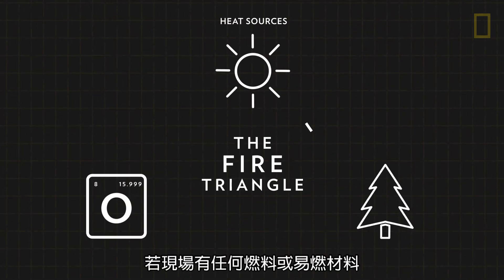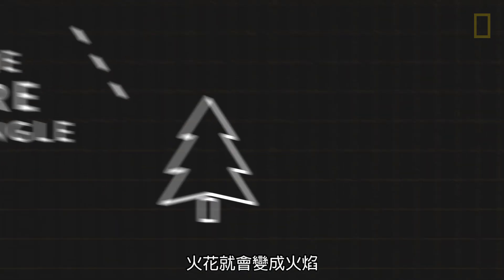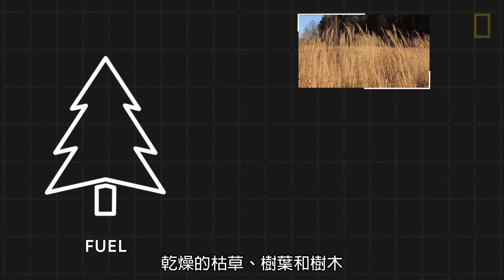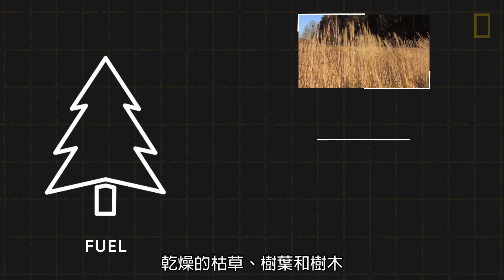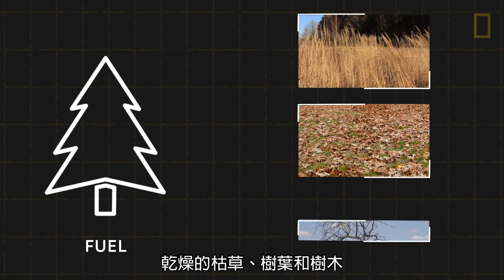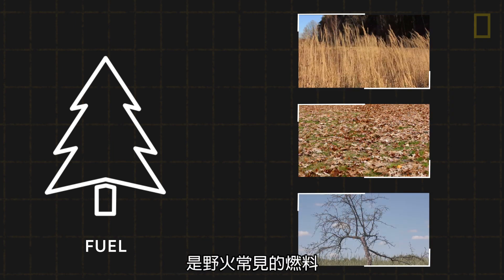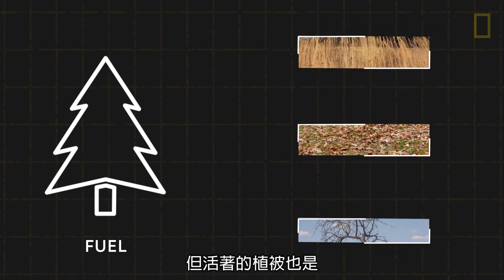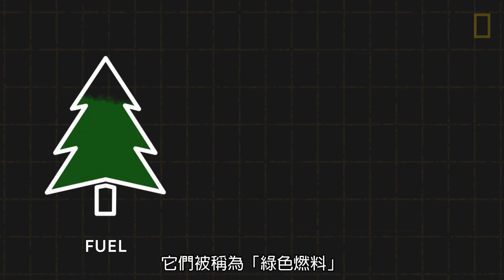That spark then turns into flames when fuel, or any flammable material, is present. Dry, dead grasses, leaves, and trees are common fuels for wildfires, but so are living vegetation, called green fuels.